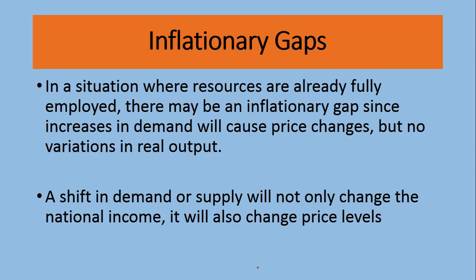If the economy is operating at full capacity — at full employment and producing whatever it can — it is at the equilibrium level. But if for any reason demand increases by 10 percent while production cannot increase because they are already operating at full level, what will happen is a rise in price by 10 percent as well.